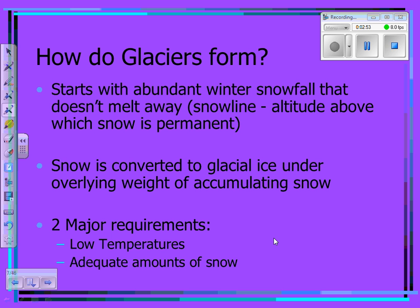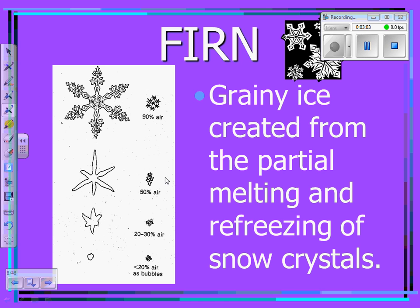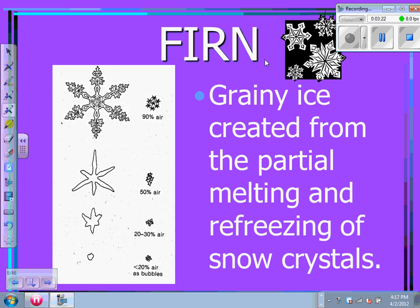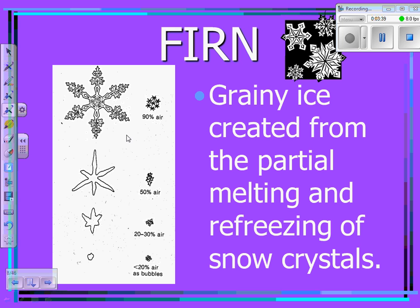Two major requirements to form a glacier are low temperatures — it's got to be cold enough — and adequate amounts of precipitation in the form of snow. As shown in the video, air is forced out of the snow crystals, forming what we refer to as firn — a grainy ice crystal created from the partial melting and refreezing of snow. This process of air being squeezed out is also what gives a glacier its blue color.